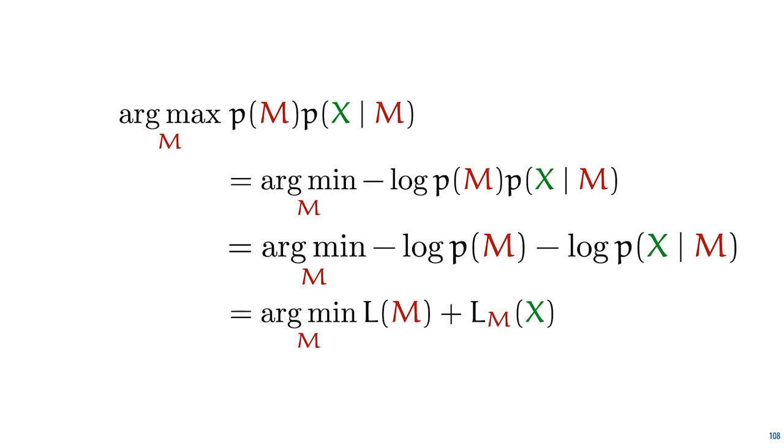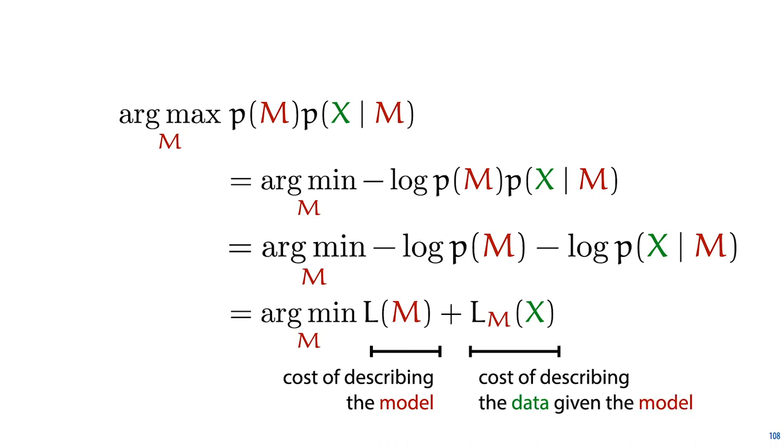And as we've learned in this video, we can interpret the negative logarithm of a probability as a code length. So what we're actually minimizing is two code lengths. First, the cost of describing the model, and second, the cost of describing the data if the model is known. So here we see a direct correspondence between Bayes' rule and a simple application of the minimum description length principle.